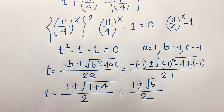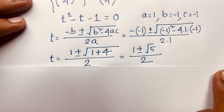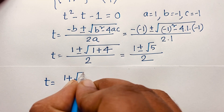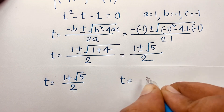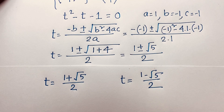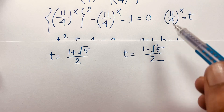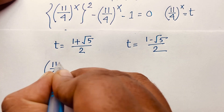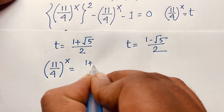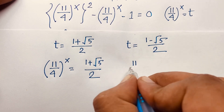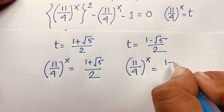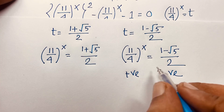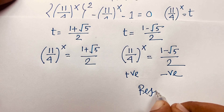So we find two roots: t equals (1 plus square root of 5) over 2, and t equals (1 minus square root of 5) over 2. Recalling that t equals (11/4)^x, the base (11/4) is always positive, so t must be positive. The second value (1 minus square root 5) over 2 is negative, so we reject it.